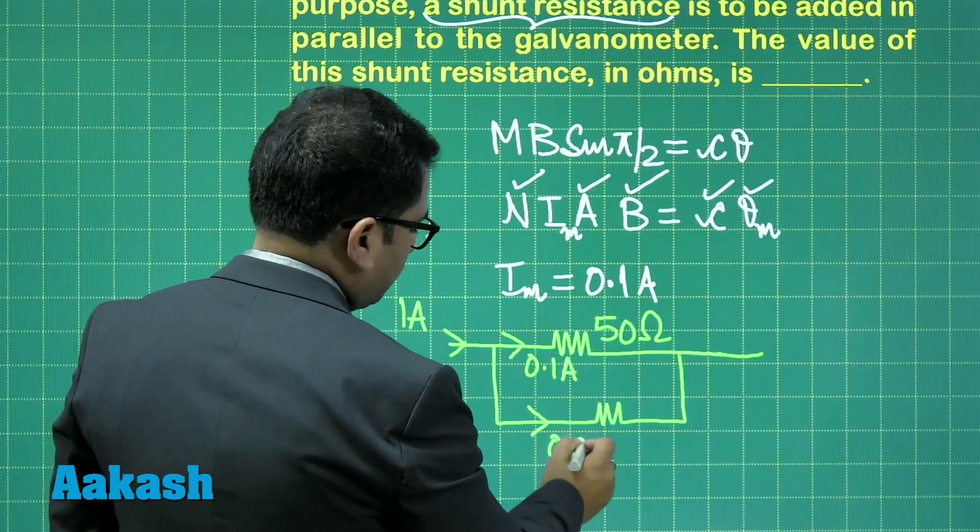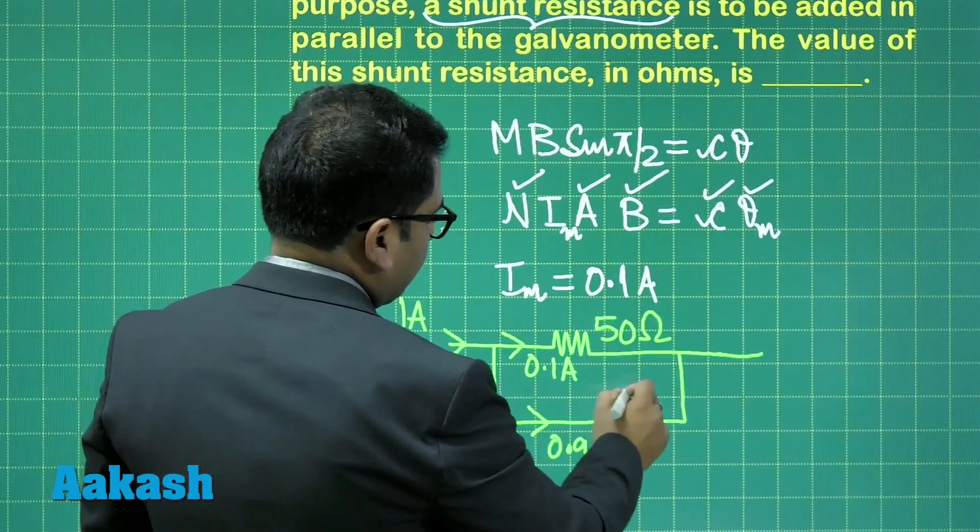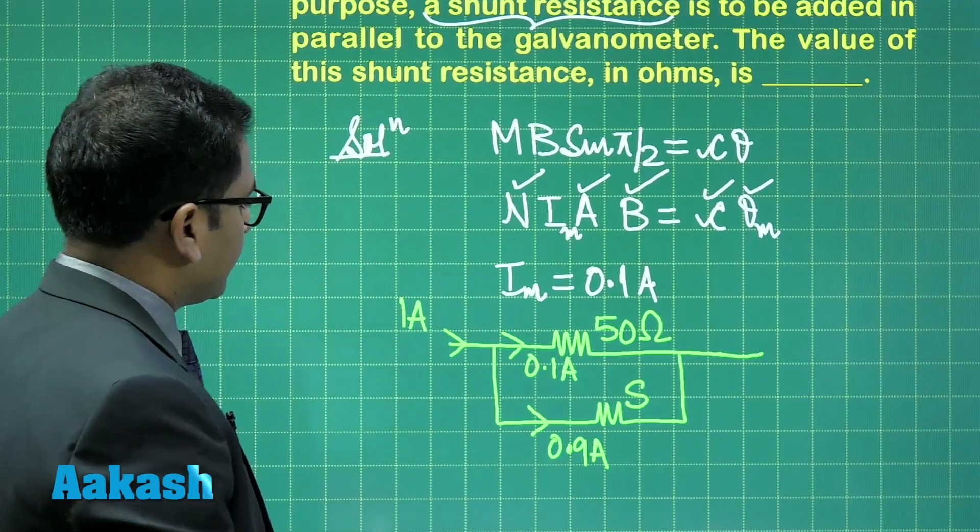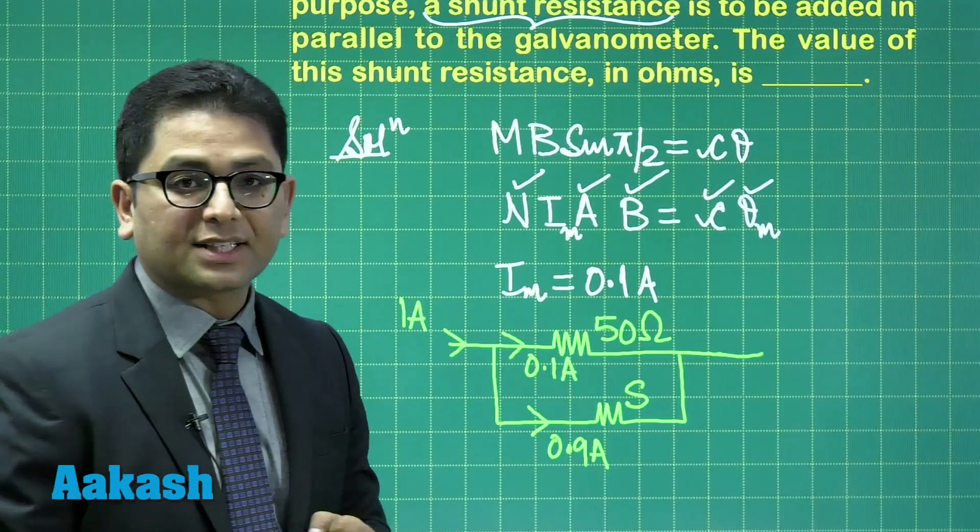In other words, this will be 0.9 ampere, and this is the shunt, and the resistance of the shunt has been asked.